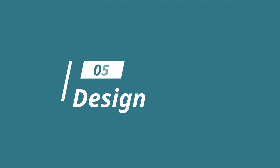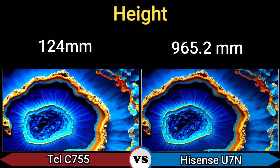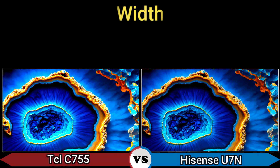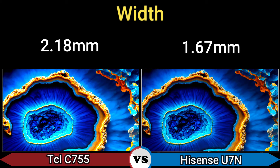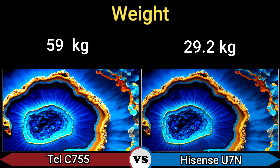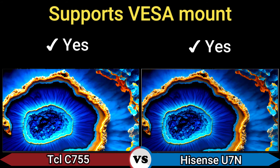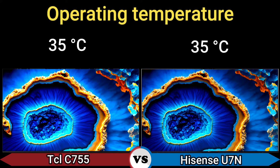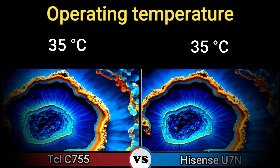Part 5 – Design. Height: 124mm vs 965.2mm. Width: 2.18mm vs 1.67mm. Thickness: 69mm vs 78.7mm. Weight: 59kg vs 29.2kg. VESA mount support: yes. Operating temperature: up to 35 degrees Celsius.